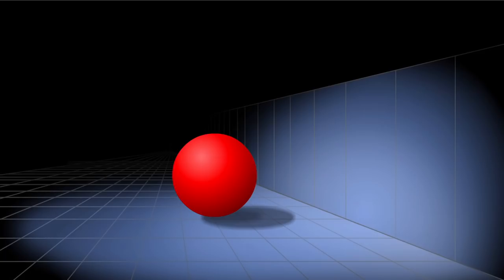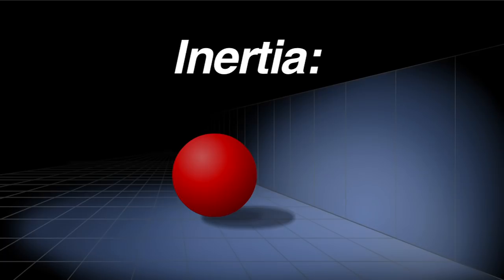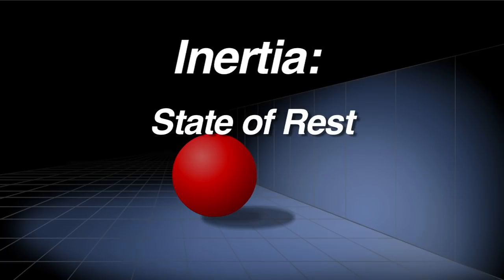The same goes for objects that are not moving. An object will remain at rest until some force makes it move. So there are two states of inertia, the state of rest and the state of moving.